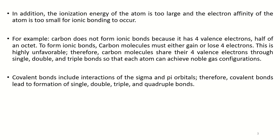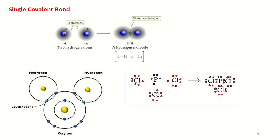Therefore, carbon molecules preferably share their outermost four valence electrons through single, double, and triple bonds to complete its octet and achieve noble gas configuration. Covalent bonds include interactions of sigma and pi orbitals. Therefore, covalent bonds lead to the formation of single, double, triple, and quadruple bonds. Here are some examples of single covalent bonds.